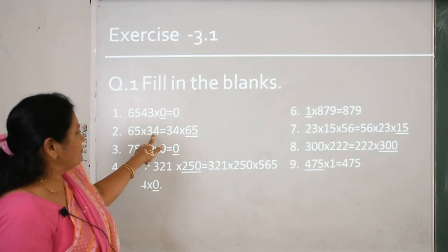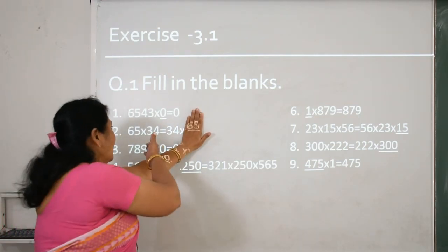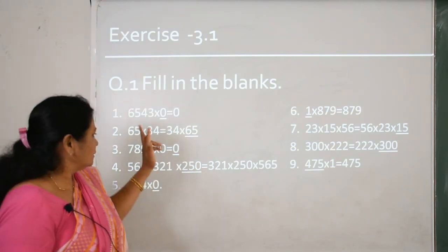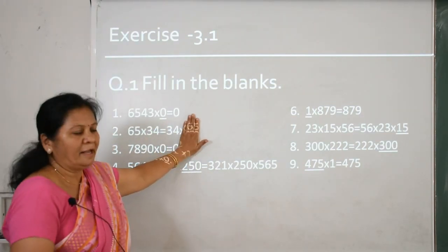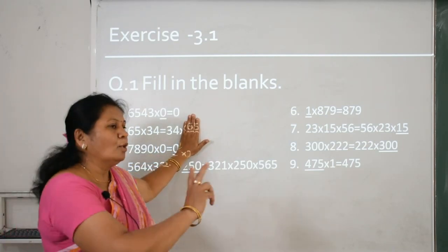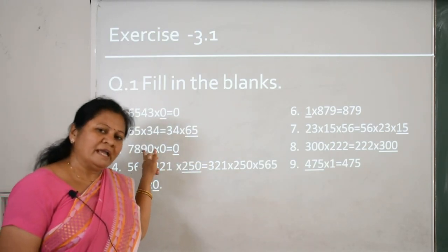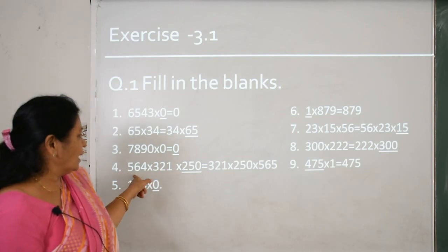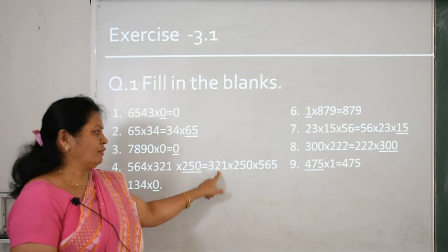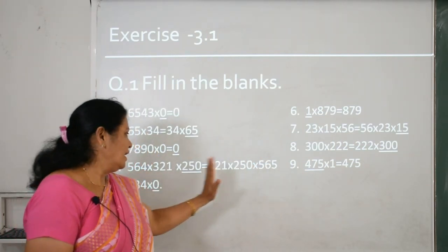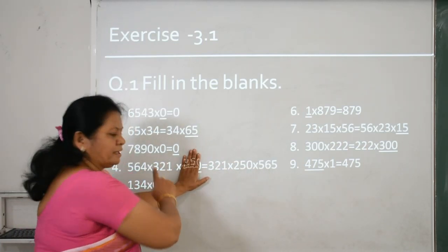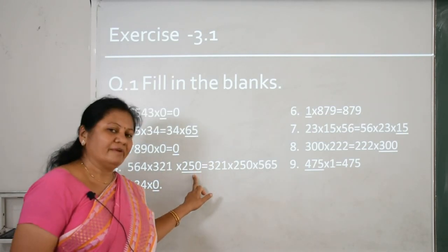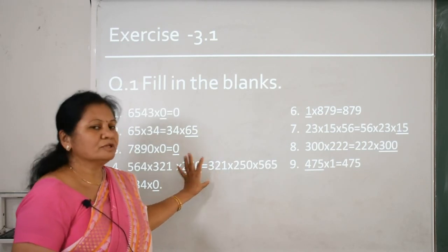Second: 65 multiplied by 34 equals 34 multiplied by what? This is the order-of-numbers-change property. So 65 multiplied by 34 is equal to 34 multiplied by 65 — both answers are the same. Third: 7890 multiplied by 0 — the answer is 0. Then for the grouping change: here 325, 250, 565 are given — it is a printing issue. For 565 times 321, we will fill 250 according to the grouping property.